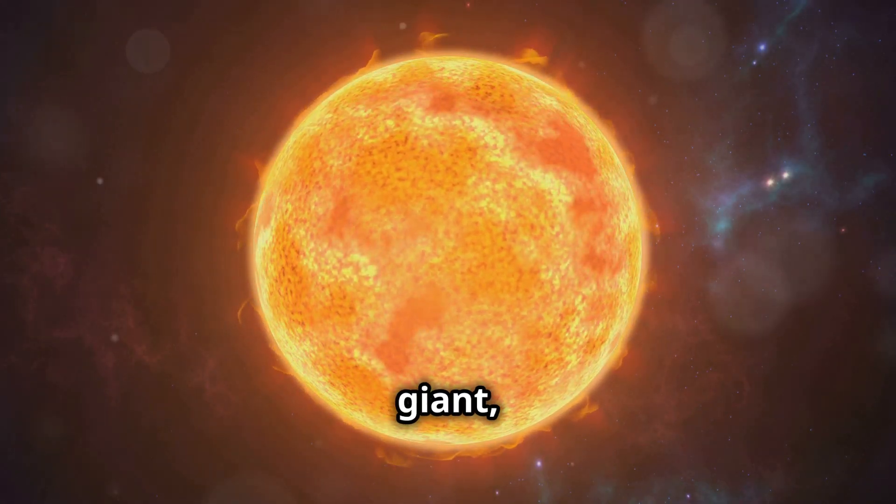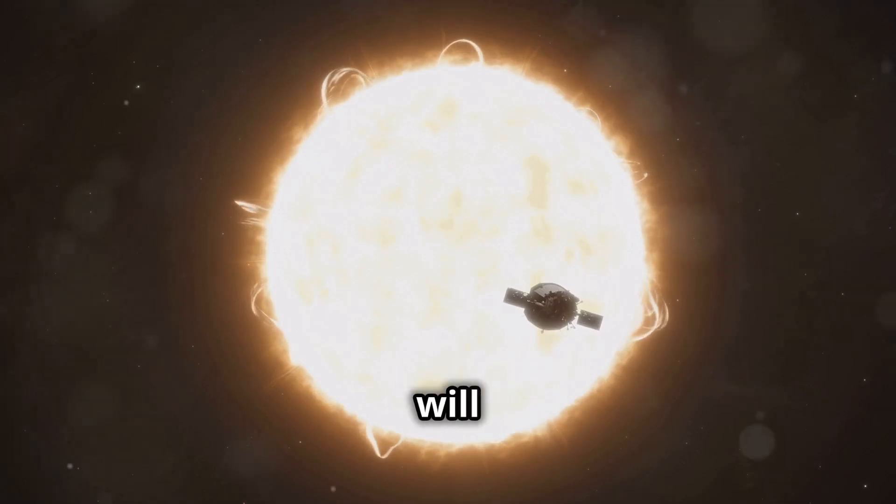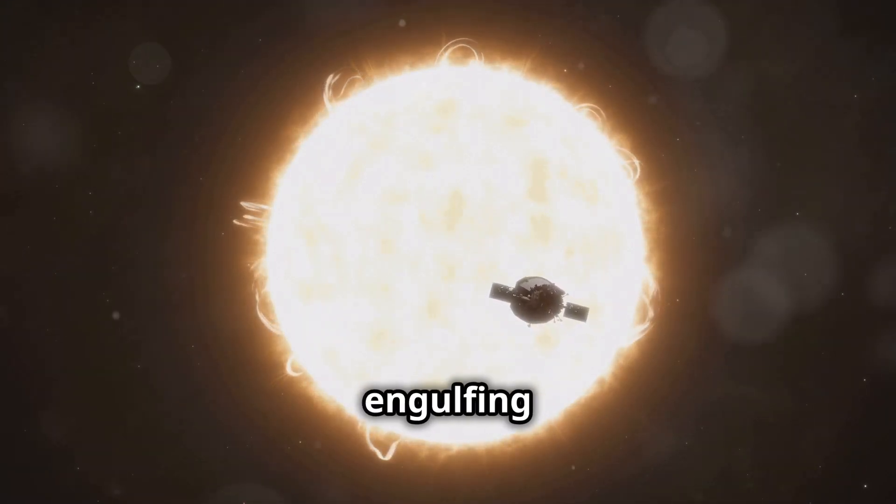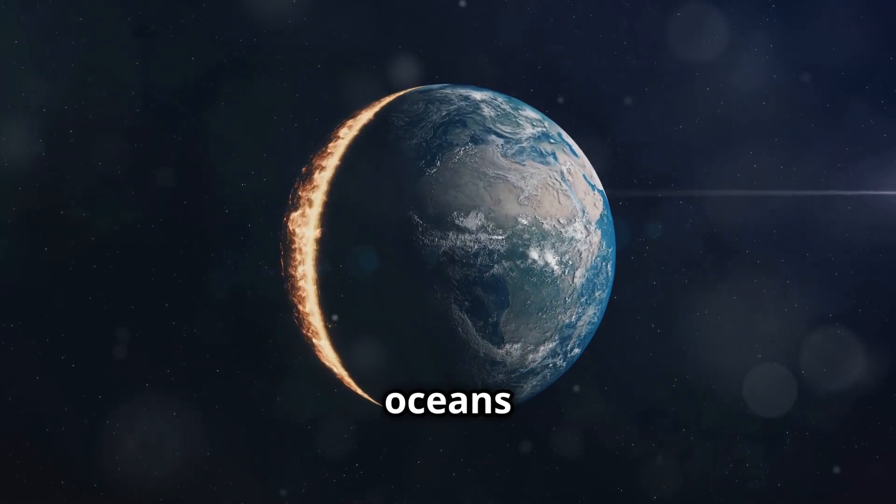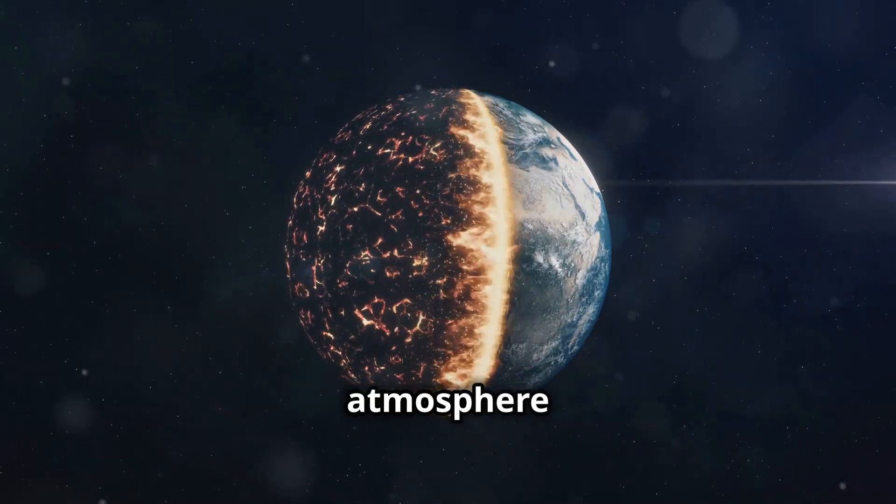When the sun becomes a red giant, it will grow so large that it will fill much of our solar system, engulfing the inner planets. Earth will be scorched and uninhabitable, its oceans boiling away and atmosphere stripped.